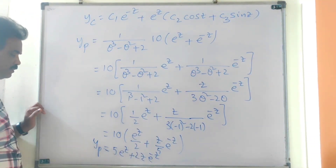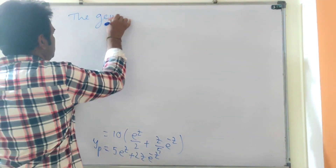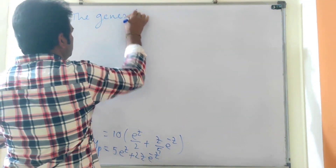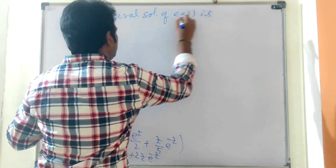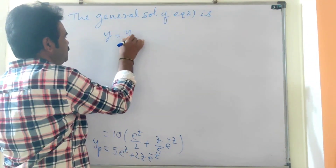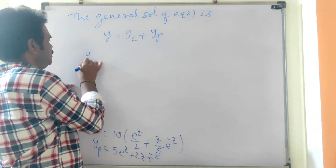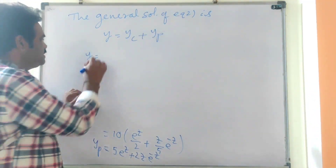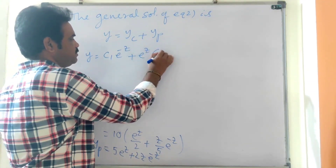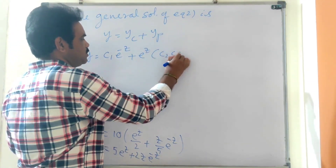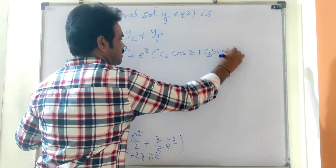The general solution of equation 2 is y = yc + yp, that is y = c1·e^(−z) + e^z·(c2·cos z + c3·sin z) + 5e^z + 2z·e^(−z).